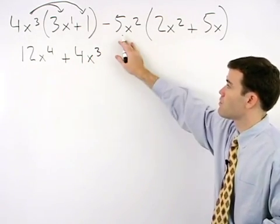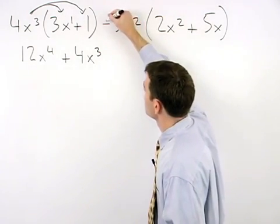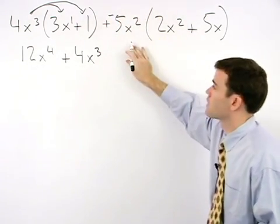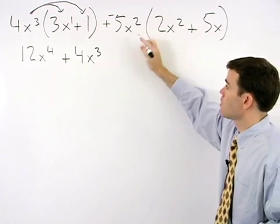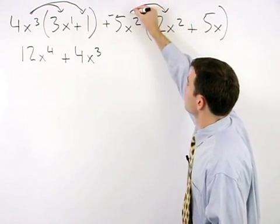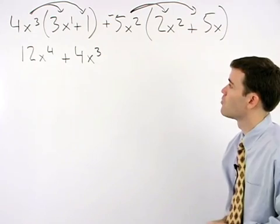Think of this minus 5x squared as plus a negative 5x squared, so that you know you're distributing a negative 5x squared through this second set of parentheses.